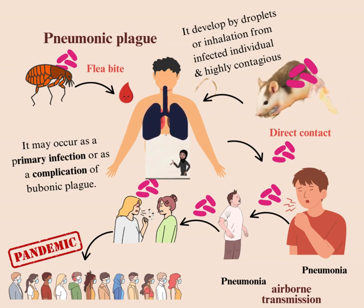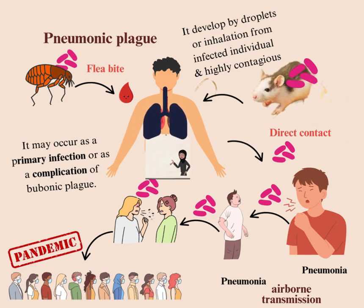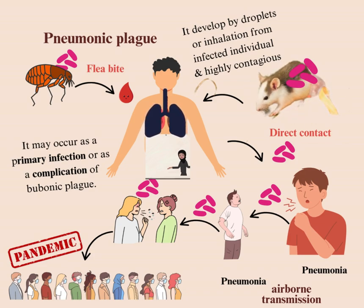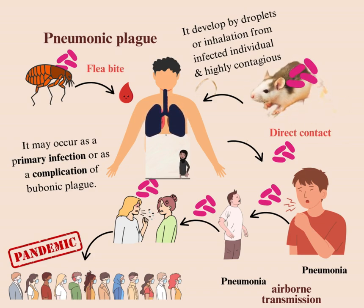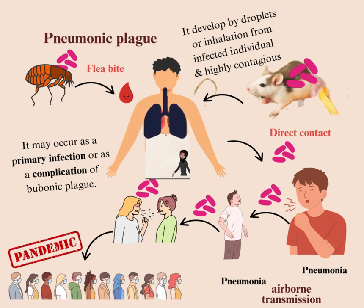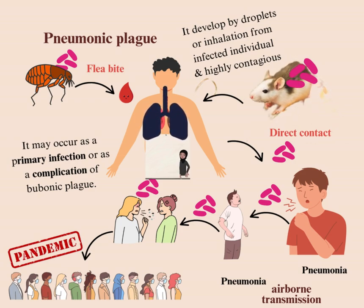Pneumonic plague: it develops by droplets or inhalation from an infected individual. It is highly contagious. It may occur as a primary infection or as a complication of bubonic plague, and can be transmitted from human to human, causing pandemic transmission.